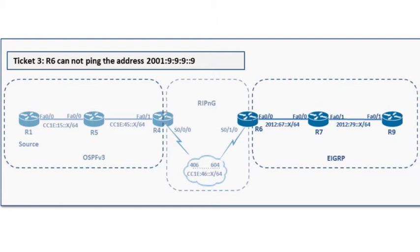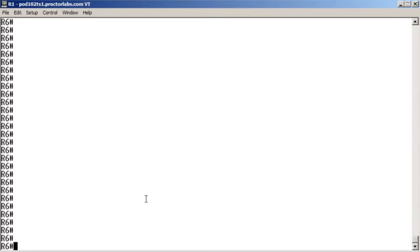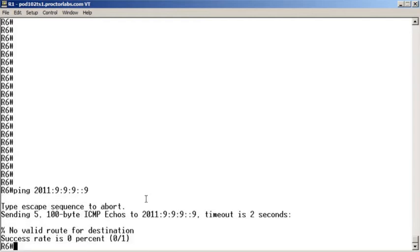So here in Trouble Ticket 3, we have R6 which cannot ping the 2001:999::9 address. For those of you that wanted to see a top-down type of approach using Quickfire, let's go ahead and do that today. We'll go top-down. First thing I'm going to do on R6 is make sure it is truly a problem. We'll try to ping that address — and we get no valid route for the destination. So we are lacking a route.